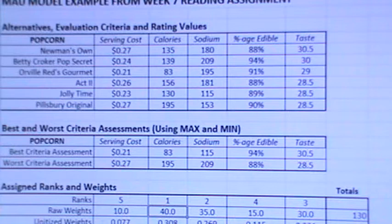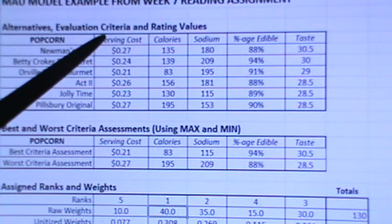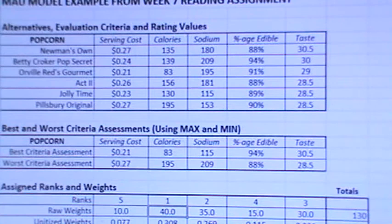When you look at this example here, you can see that I created the different popcorn types and I created the attributes across the top, and I just entered in the values based on what I was given in the assignment.